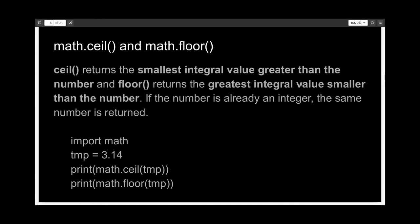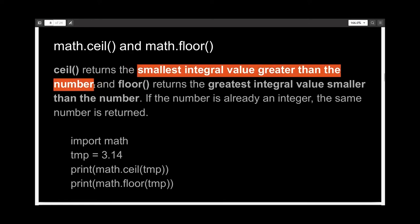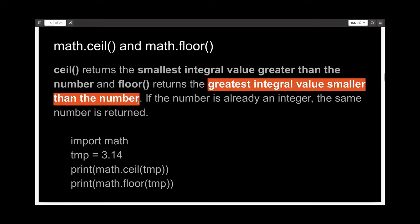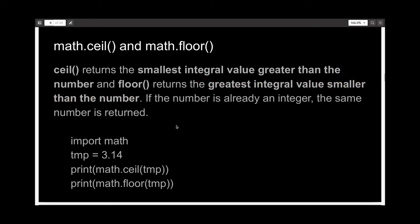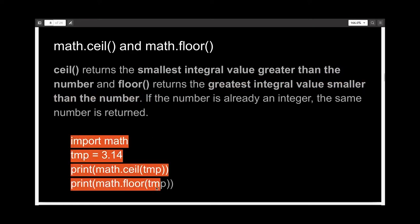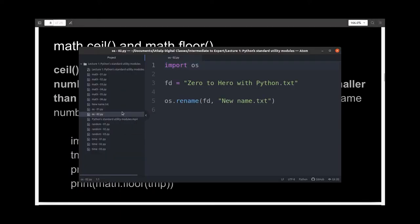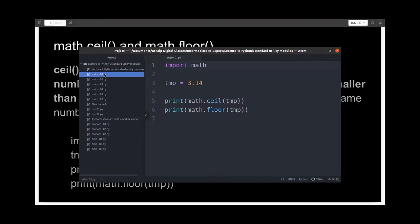The first operation is the ceiling and floor operation. Ceiling will return the smallest integer which is greater than your current number, and floor will return the greatest integer smaller than your current number. I've written the demo code in Atom and I'll show it to you there.